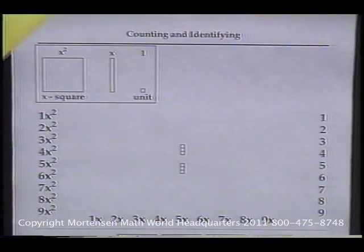Here is page 16 from the workbook. The left-hand column is our X-squares. The bottom line is our X's. And the right-hand column is our units.